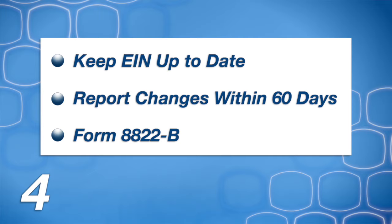Fourth, always keep your EIN information up to date. You need to report changes in responsible party to the IRS within 60 days using Form 8822B. Use the same form to report changes in address.